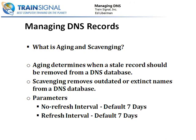What is aging and scavenging? The aging process allows the DNS server to determine whether a stale DNS resource record should be removed from the DNS database. Scavenging is the process of cleaning and removing outdated or extinct names from the DNS database. Aging and scavenging helps keep the zone data current. This process is particularly important if the DNS environment is using dynamic updates, because resource records can automatically be modified by clients, and in some cases those records won't automatically be removed when computers are removed from the network.